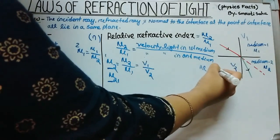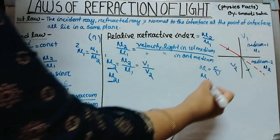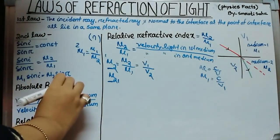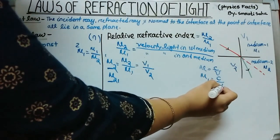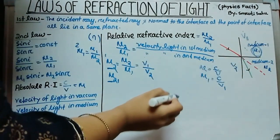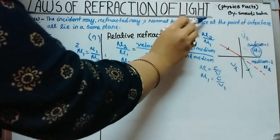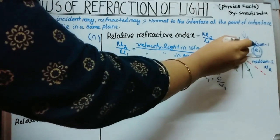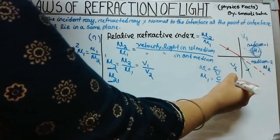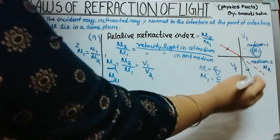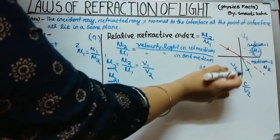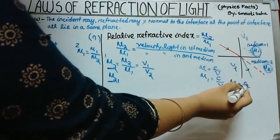We know that mu equals C by v. So mu1 equals the ratio of velocity of light in vacuum to the velocity of light in the first medium — that is, mu1 = C by v1. Next, mu2 equals C by v2, which is the ratio of velocity of light in vacuum to the velocity of light in the second medium.